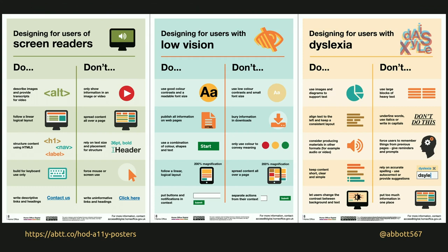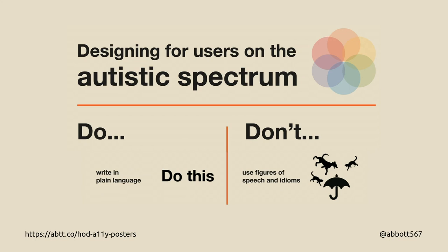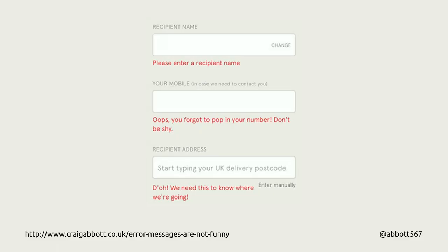We also have a load of posters in government produced by the Home Office. These have been really popular — translated into about 22 languages. They cover dos and don'ts for designing for screen readers, low vision, dyslexia, and more. They're great to have around the workplace and useful for designers to refer to whilst designing. For example, designing for users on the autistic spectrum: do write in plain language, don't use figures of speech. 'Raining cats and dogs' — some people on the autistic spectrum take it literally. It also applies to people where English isn't their first language.